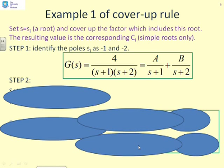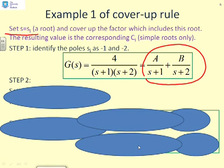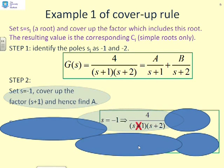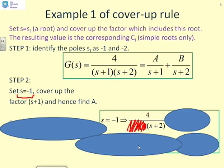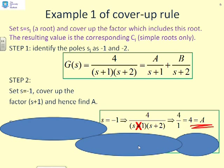Example 1: G of S equals 4 over (S+1)(S+2), written as partial fractions A over (S+1) plus B over (S+2). The technique is to set S equal to Si, where Si is a root, and that gives the corresponding residue Ci. Step 1: the first root is for the factor S+1, so I set S equal to minus 1, cover up the factor S+1, and find A. Covering up S+1 leaves 4 over (S+2). Substituting S equals minus 1 gives 4 over 1 equals 4, therefore A equals 4.